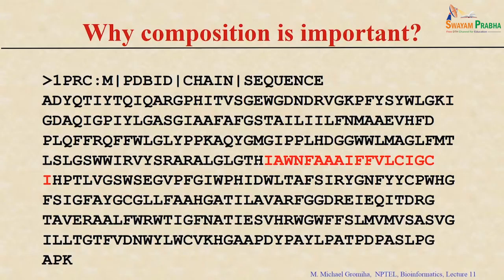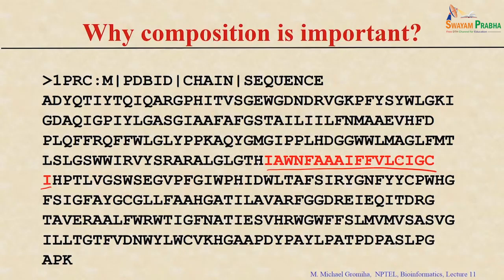I'll show some examples. This is one sequence for a particular protein and it shows something in red font. Can you guess the region with the red font? It is completely hydrophobic. If you see the residues, most of them are alanine, valine, phenylalanine, isoleucine and so on. This region is predominantly hydrophobic residues.